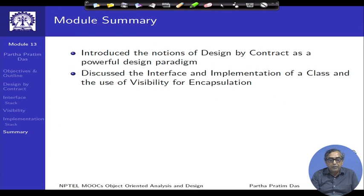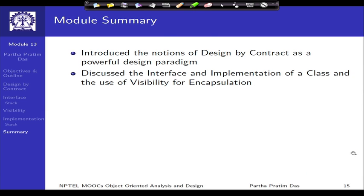In this module we have introduced the basic notion of design by contract as a powerful design paradigm — we will keep referring back to this at later points. We have discussed the nature of a class in terms of its interface and implementation, and reiterated that implementation and interface need to be segregated. This separation can be achieved in various graded manners using different kinds of visibility. We will discuss more and gain further insight when we introduce the different relationships of classes, particularly inheritance and specialization, and see how visibility controls encapsulation at multiple levels to provide finer control on the implementation.